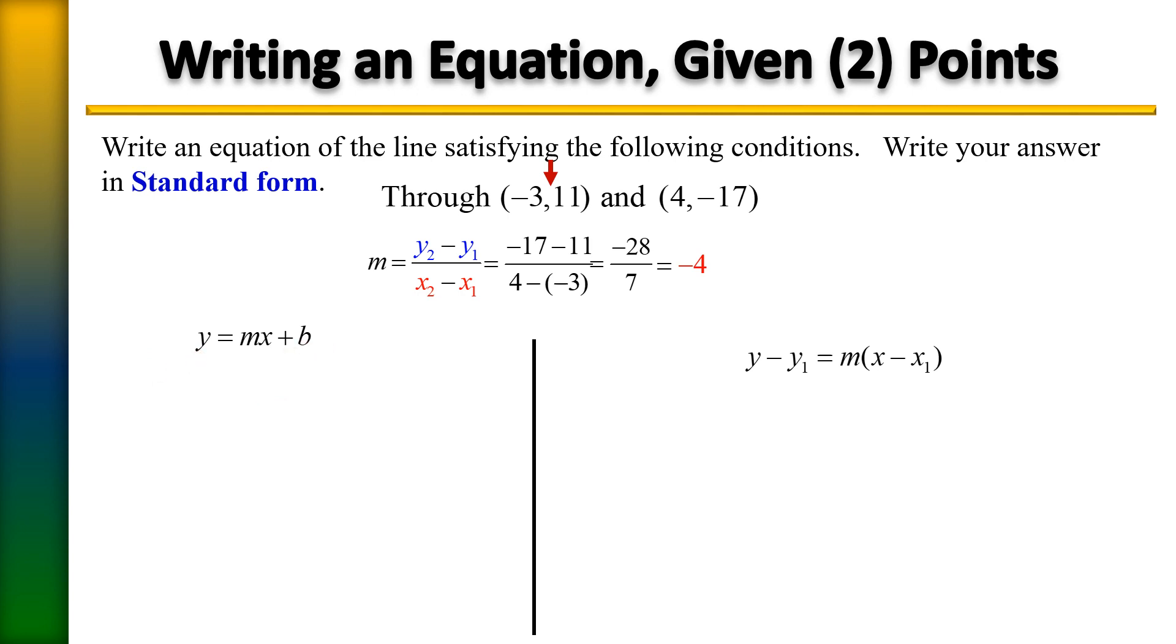So here I'm going to remove this y and replace it with our given value that we're using of y, which is 11. I'm going to remove m and replace it with the slope that we just found, which is -4. I'm going to remove x and replace it with our given value of x, which is -3.